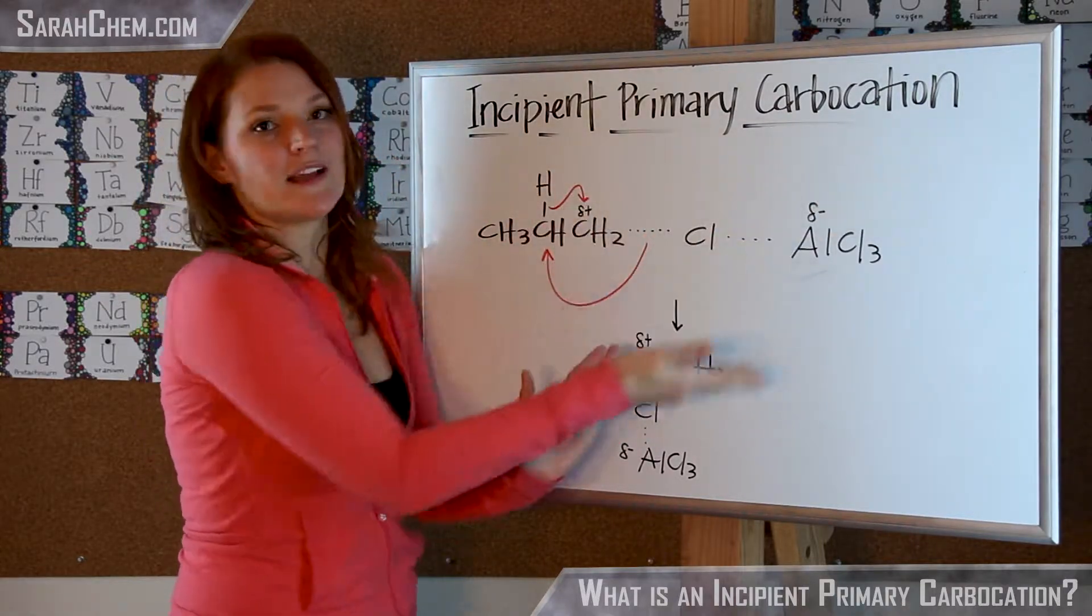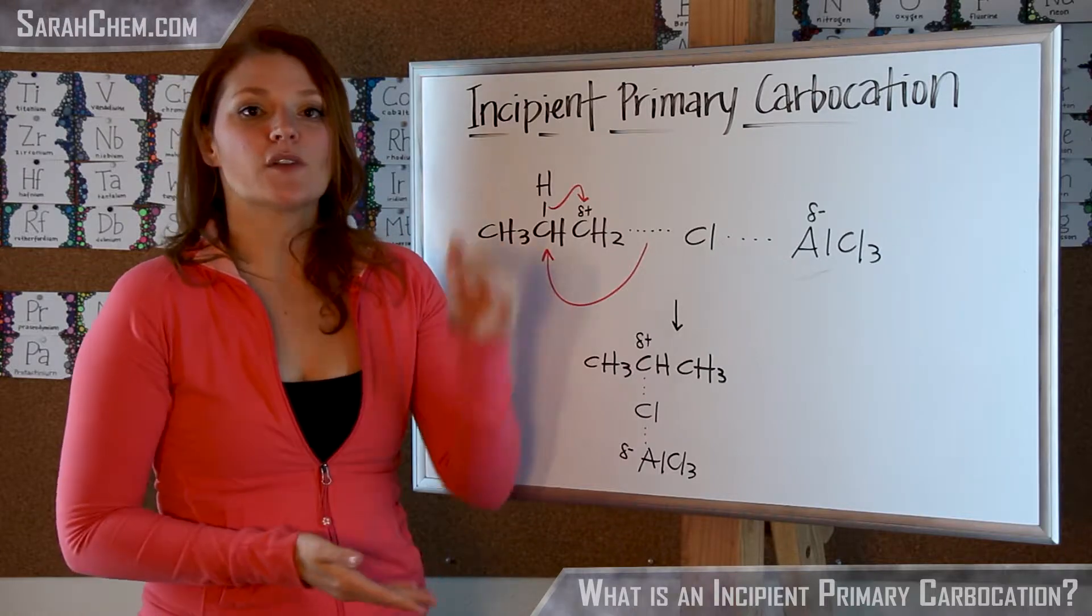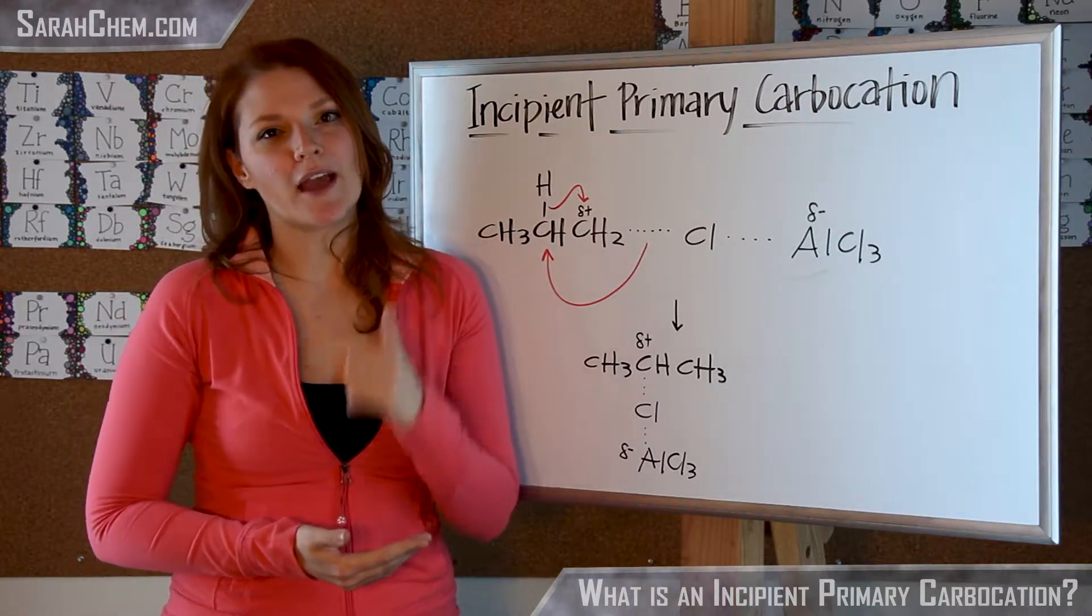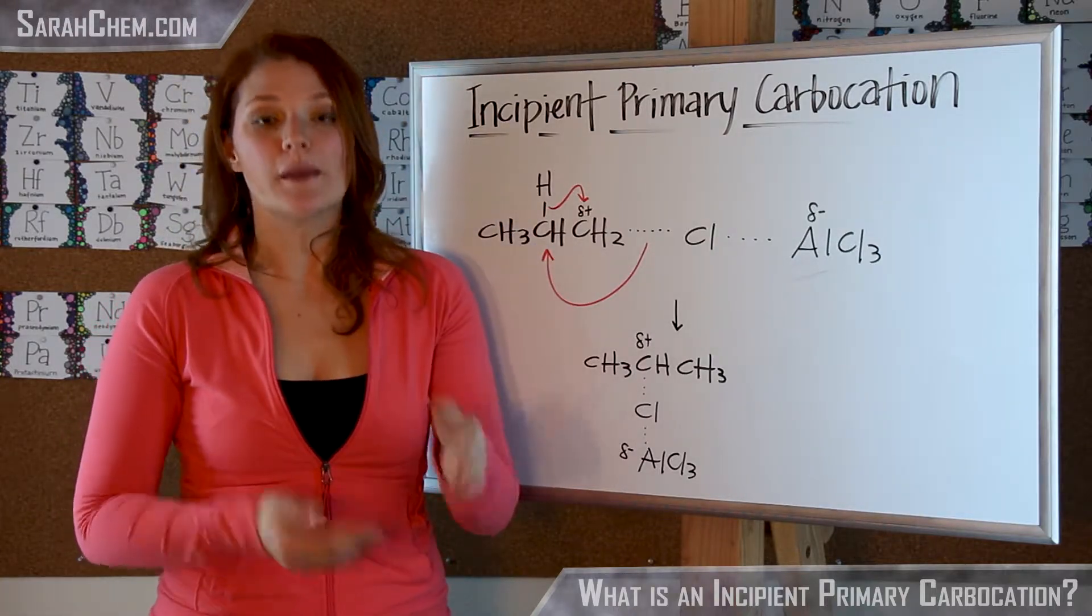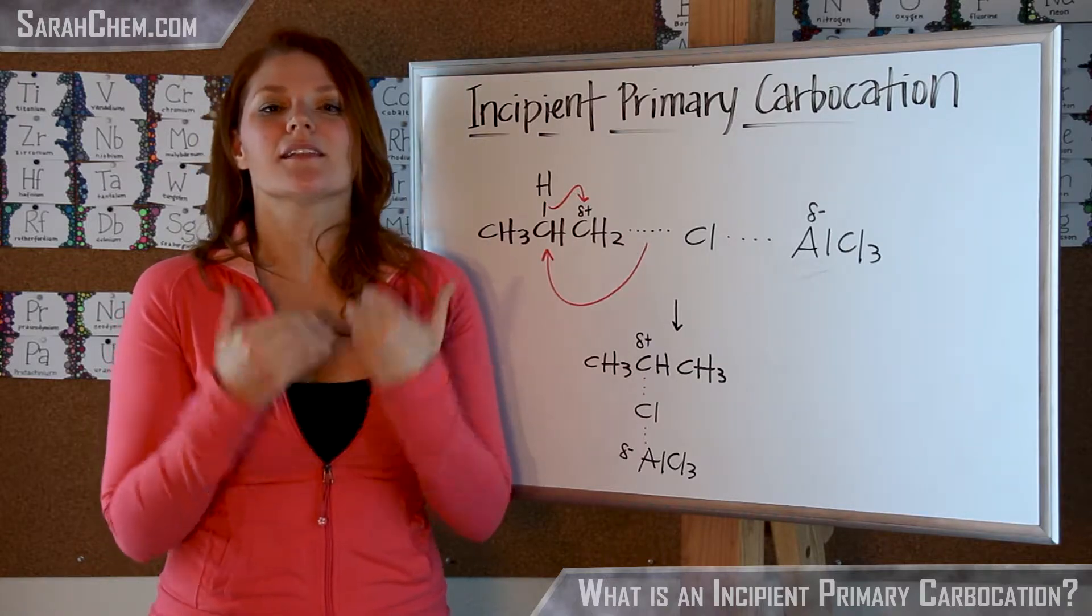So this remains complexed to your Lewis acid. Now this is because primary carbocations aren't particularly stable to form, but you can create something that is still able to react.